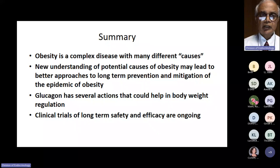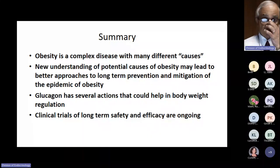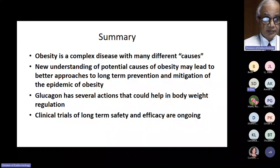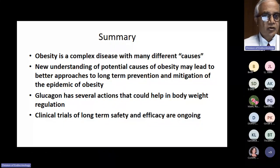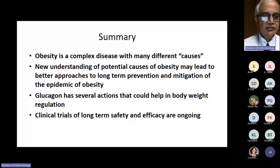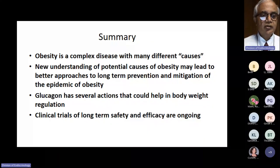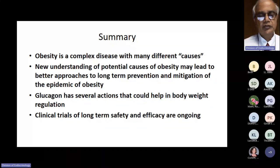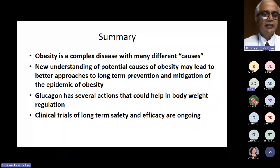In summary: obesity is a complex disease with many different causes. A new understanding of the potential causes of obesity may lead to better approaches to long-term prevention and mitigation of the epidemic. Glucagon has several actions that could help in body weight regulation, and clinical trials of long-term safety and efficacy are ongoing. I'll end my talk here and welcome any questions.